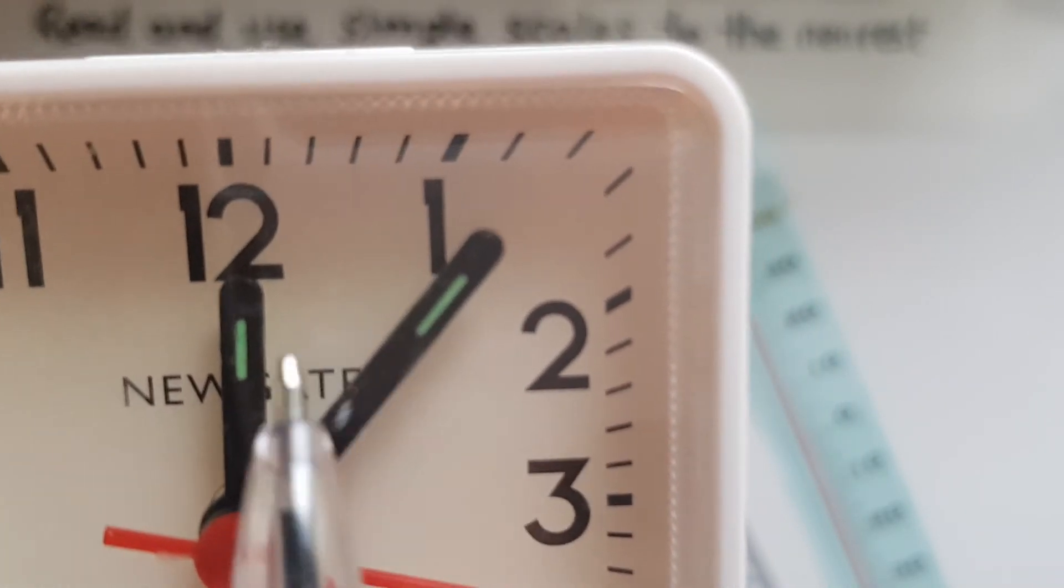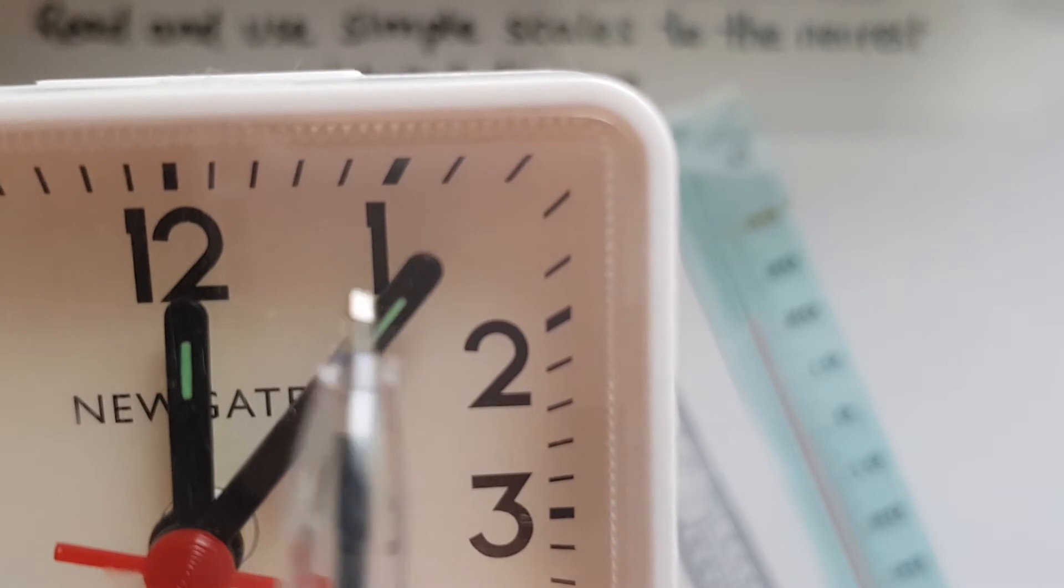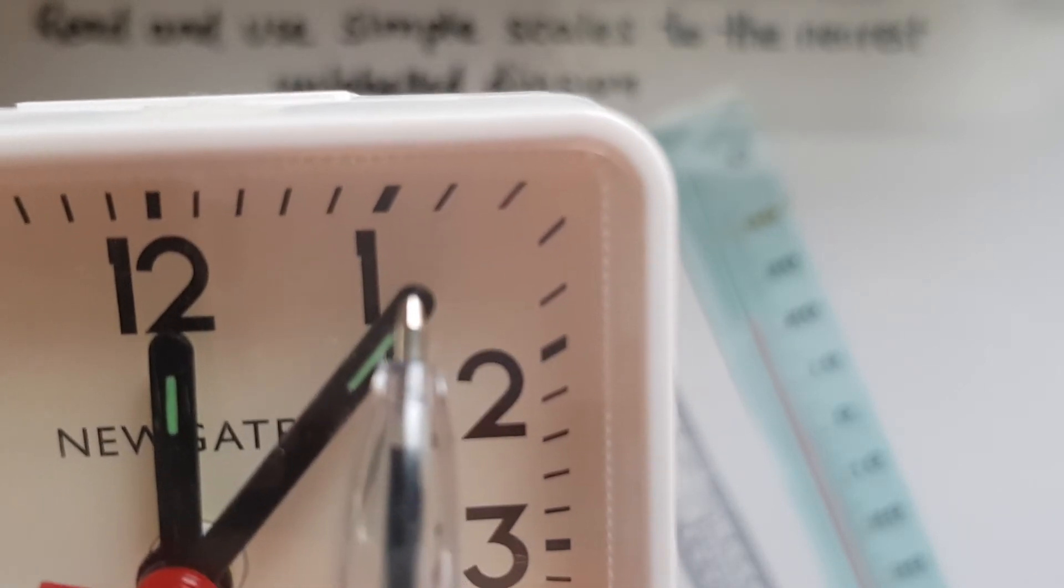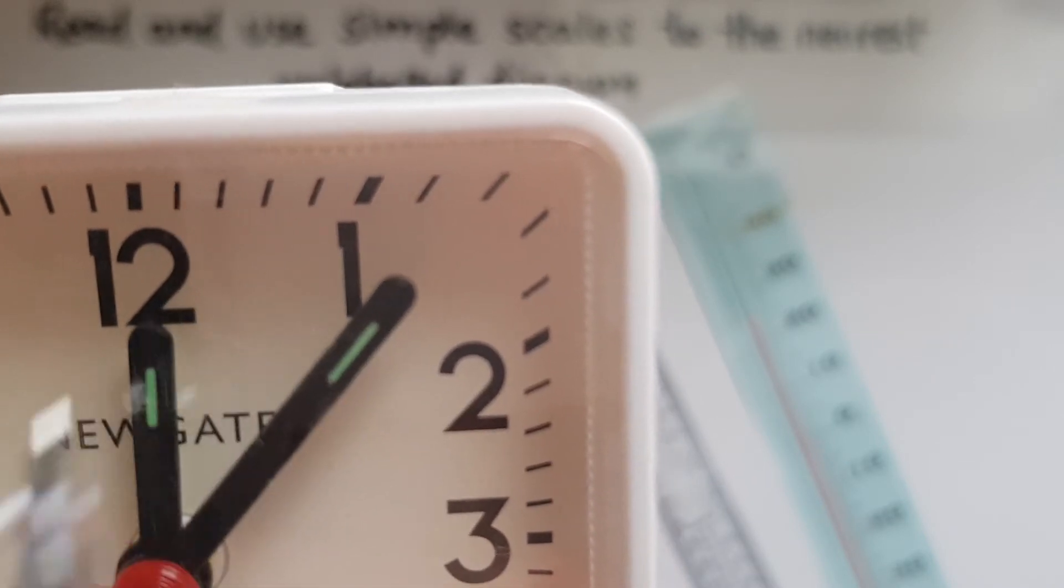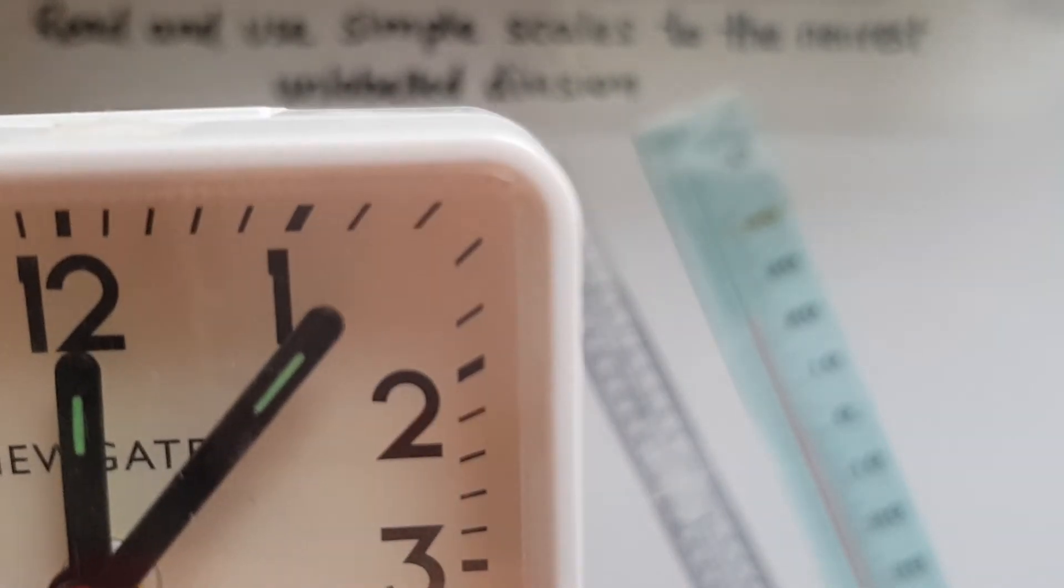So 7 minutes past 12. If we had to round this to the nearest 5 minutes, then this is definitely closer to the 1 than to the 2, so we can say 5 past. That is what rounding is.